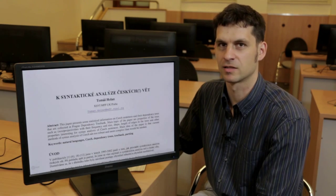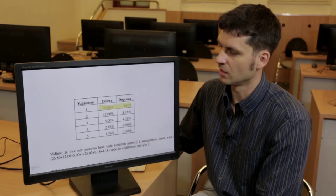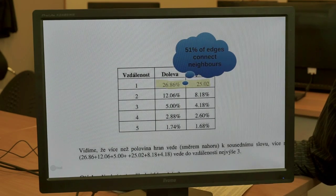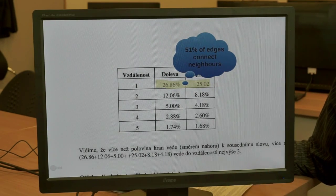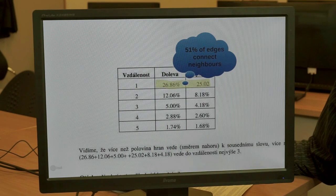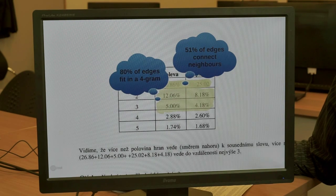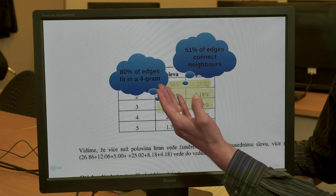Interestingly, in explaining the success of phrase-based MT, it's about 50% of edges that connect adjacent words. So bigrams are an excellent approximation of dependencies. And similarly, the data tell us that about 80% of edges fit in a fourgram.